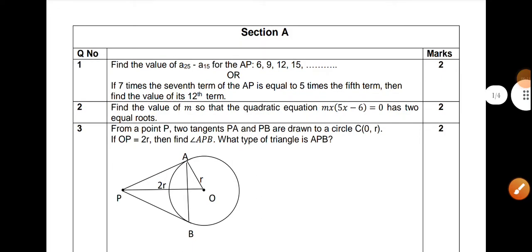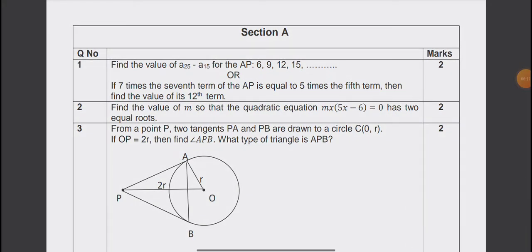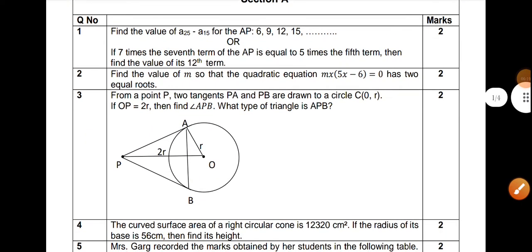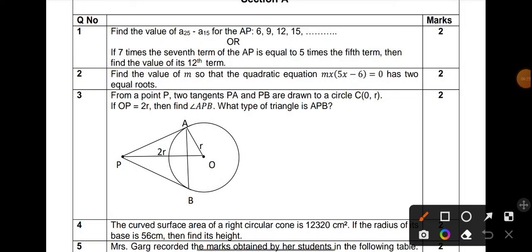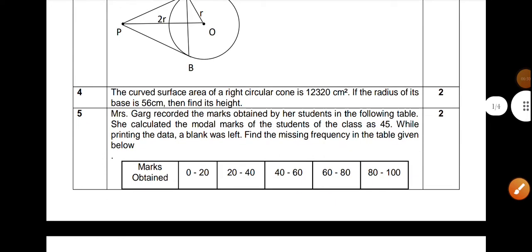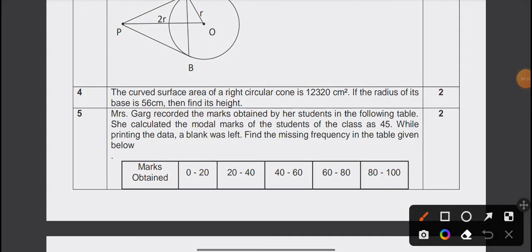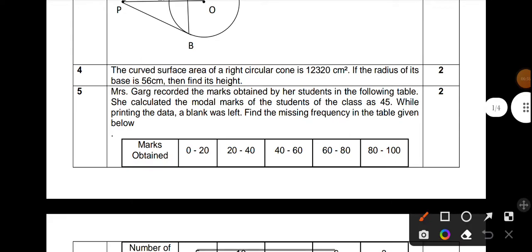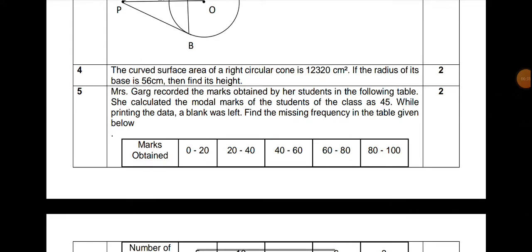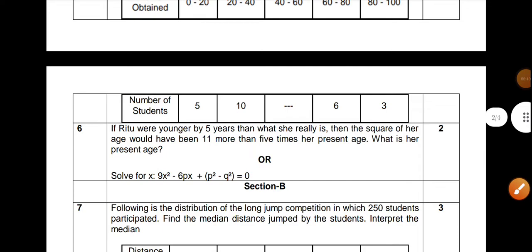Looking at the questions carefully, in Section A there were 6 questions. Question 1 is from the AP chapter, question 2 is from quadratic equations, question 3 is about triangles and circles, question 4 is about curved surface area, surface area and volume, question 5 is statistics.